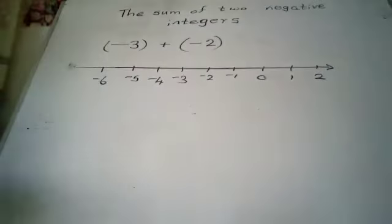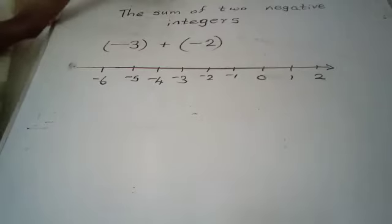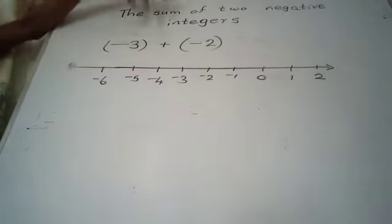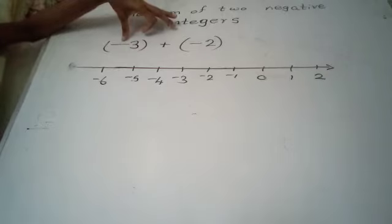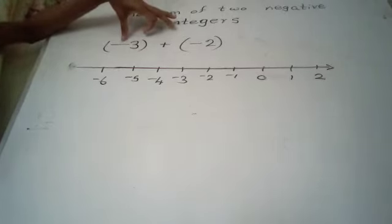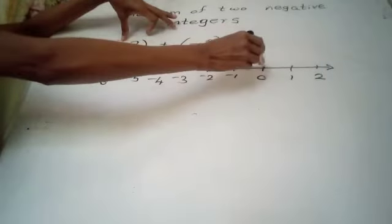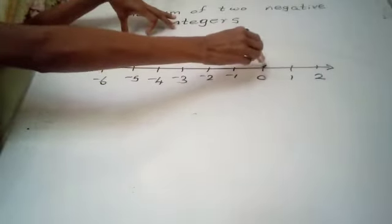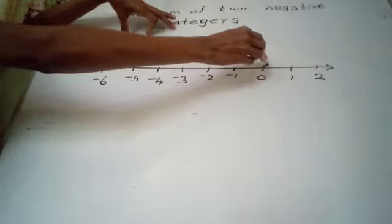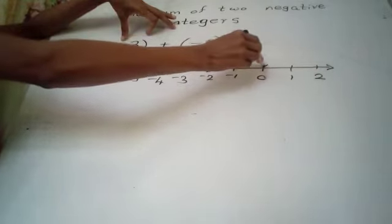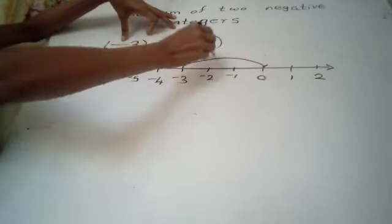Starting from 0, let's go 3 units towards the left along the number line — here is negative 3.